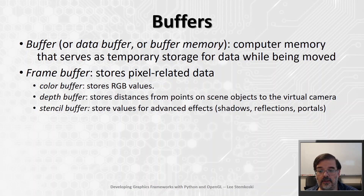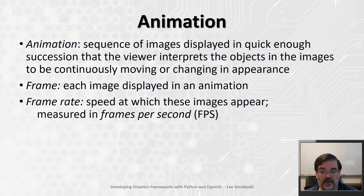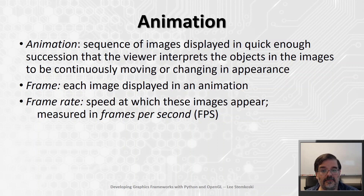In addition to rendering three-dimensional scenes, another goal in computer graphics is to create animated scenes. An animation consists of a sequence of images displayed in quick enough succession that the viewer interprets the objects to be continuously moving or changing in appearance. Each image displayed is called a frame. The speed at which these images appear is called the frame rate, measured in frames per second. The standard frame rate for movies and television is 24 frames per second. Computer monitors typically display at 60 frames per second, but for virtual reality simulations, developers aim for 90 frames per second as a minimum, because lower frame rates can cause disorientation and other negative side effects.